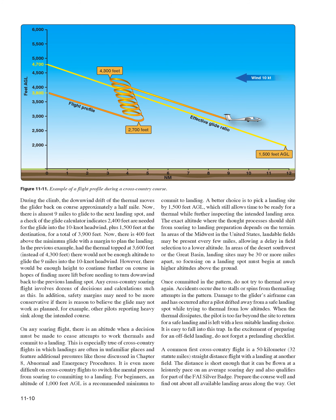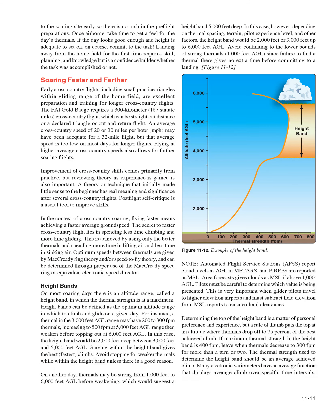In the excitement of preparing for an off-field landing, do not forget a prelanding checklist. A common first cross-country flight is a 50 km (32 statute miles) straight distance flight with a landing at another field. The distance is short enough to be flown at a leisurely pace on an average soaring day and qualifies for part of the FAI Silver Badge. Prepare the course well, find out about all available landing areas along the way, and get to the soaring site early so there is no rush in pre-flight preparations.